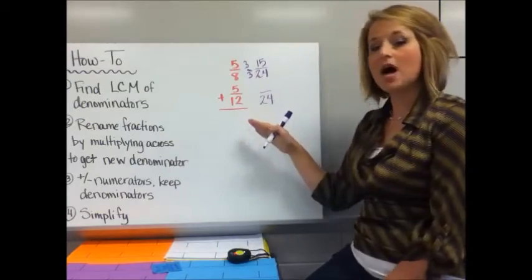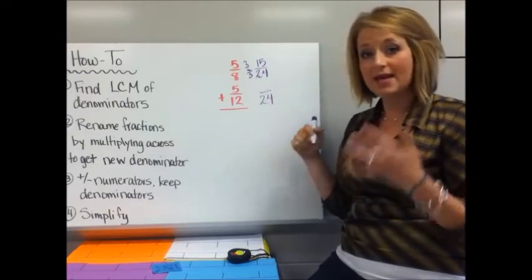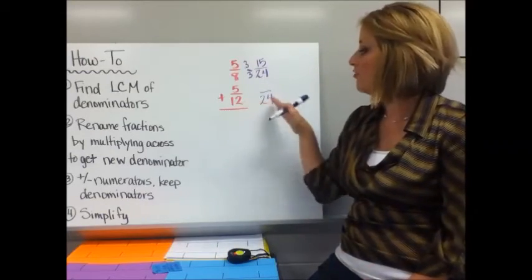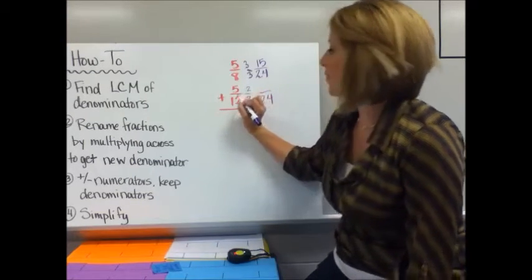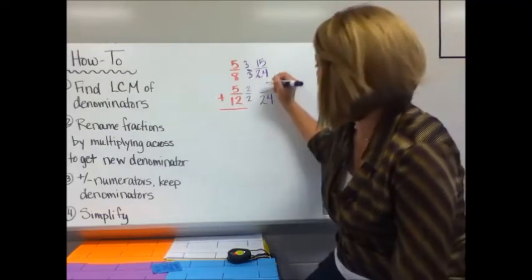Do the same thing with the bottom one, except I'm not multiplying by 3. It's going to be a different multiple. To go from 12 to 24, I multiply by 2. So I multiply 5 times 2 and I get 10.